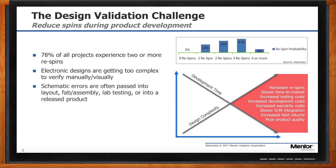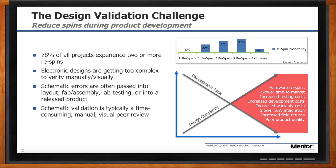If you look at the schematic portion of the design process and think about the process as a line from concept to manufacturing — with concept all the way on the left and manufacturing all the way on the right — schematic is very close to the left-hand portion. Those schematic errors are often passed into layout, fabrication, assembly, lab testing, or even into the released product. The idea is to verify the schematic as early on in the design process as possible, and that's where Expedition Schematic Integrity Analysis comes into play.